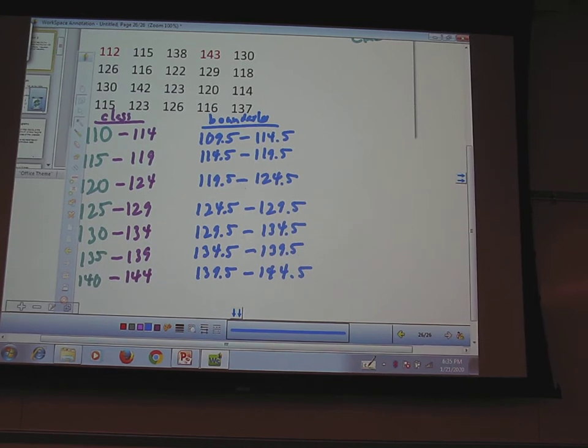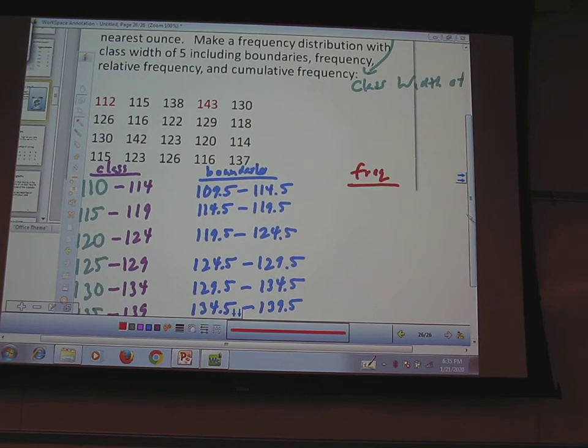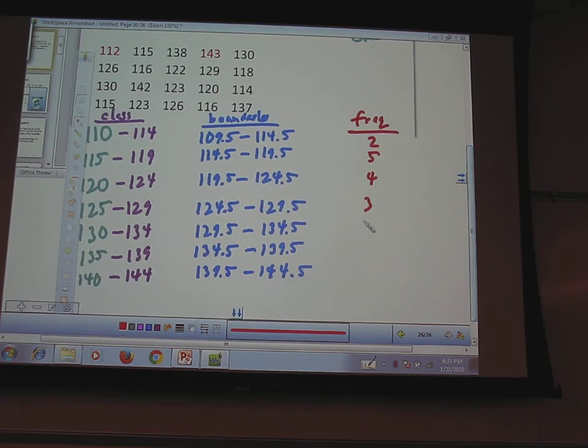What's next? My frequencies. Maybe you tally to get them, maybe you didn't. It doesn't matter. Tally could be a part of it or not. It's optional. What'd you guys get for this? First one? Two. Next one? Five. Next? Four. Next? Three. Next? Two, two, two. Everybody alright with that?